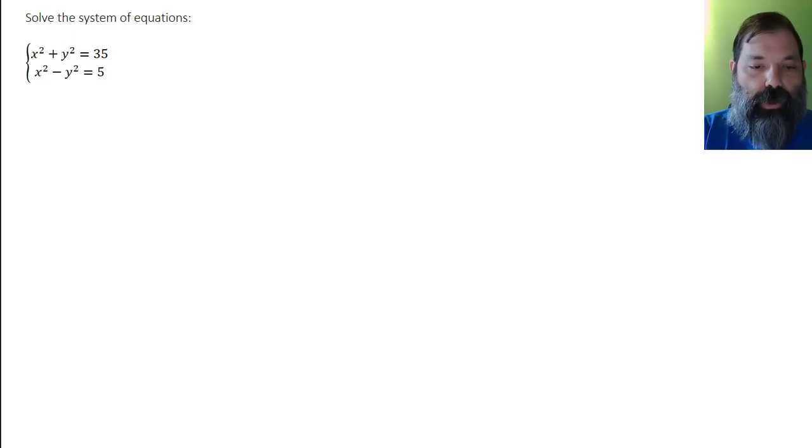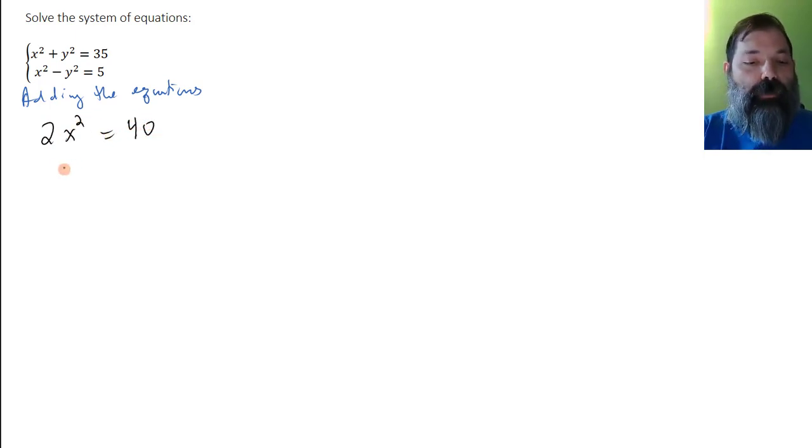Adding the equations, 2x squared plus 0y squared equals 40, which implies that x squared is 20.